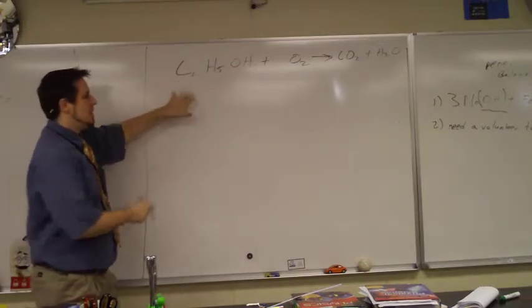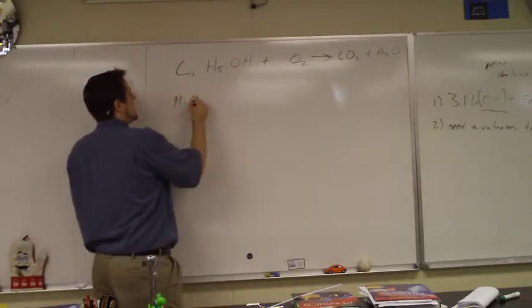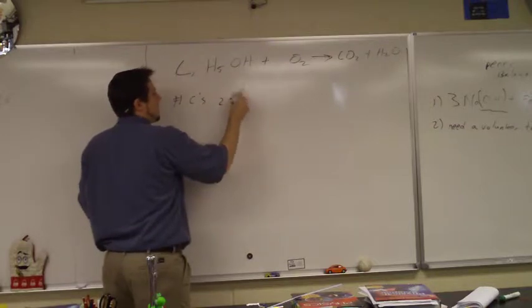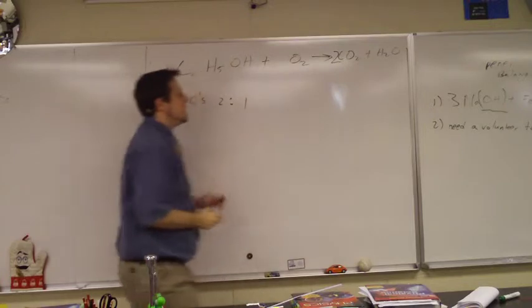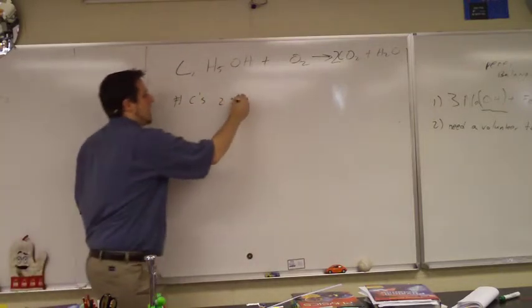Where do you want to start? C, because I'll probably pick the right spot. Alright, so let's start with the C. How many C's on the left? Two. So number of C's on the left, we've got two. How many are on the right? One. So I've got to put a two. Alright, so we've got two and two for carbons.